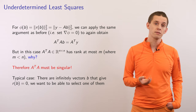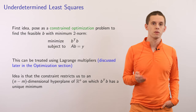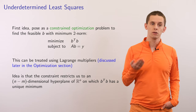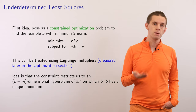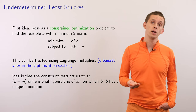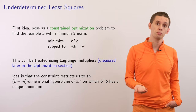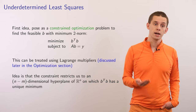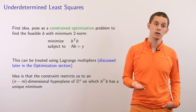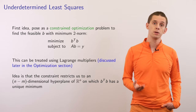So we want a method that could actually select a particular one of those possible solutions. The first idea is to pose a constrained optimization problem: find a solution b that minimizes the 2-norm b transpose b, subject to the constraint that Ab equal y. This can be treated using Lagrange multipliers, which we'll cover in the optimization section. The constraint restricts us to an N minus M dimensional vector space, and in that subspace we can search for the unique solution that minimizes b transpose b.